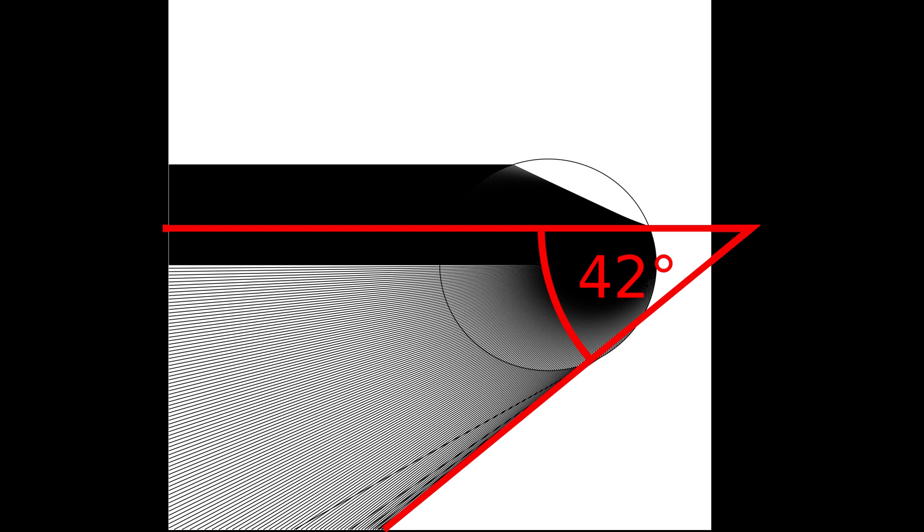This means a rainbow can only be observed if the angle between the sun and the observer is given as that angle. This is also the reason why the rainbow has always the shape of a bow, because all water drops along this bow have to fulfill the requirement of 42 degree.